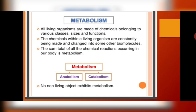Metabolism is further characterized into anabolism and catabolism. Anabolism means making complex biomolecules from smaller ones — smaller units come together to build a larger one. Catabolism means breaking down, where a large molecule is broken down into two or more smaller molecules. Non-living objects will never exhibit any form of metabolism. Metabolism is a very important and sure characteristic of living organisms.